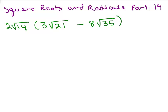So we have 2 square roots of 14 times 3 square roots of 21 minus 8 square roots of 35. None of those square roots can be simplified, so I'm going to go right for the distributive property. Notice these are kind of big numbers inside the square roots when you multiply them together, so we're going to use our technique of leaving everything in factored form. That'll be easier.